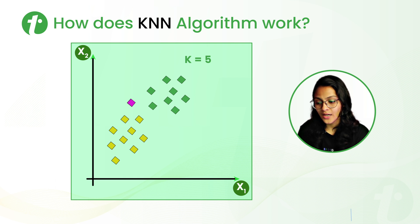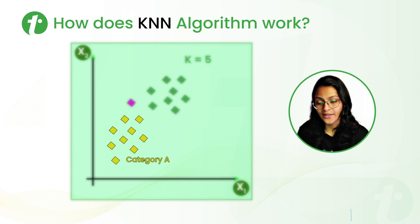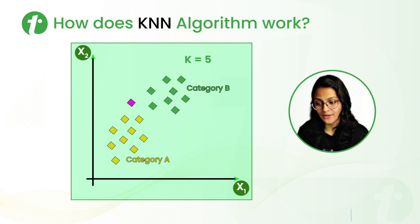Consider there are two categories: category A and category B. Now, we have to determine whether this new data point belongs to category A or category B. We need the value of K. So assume for this case, the value of K is 5.